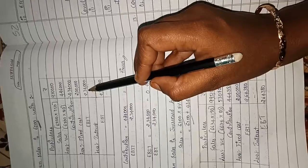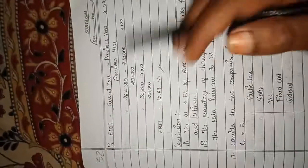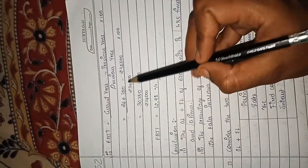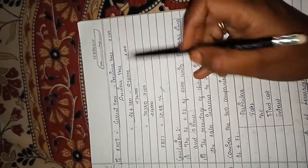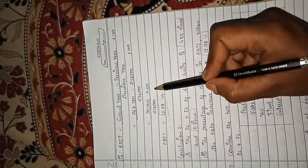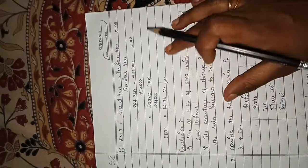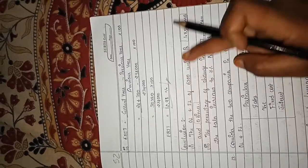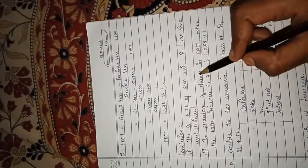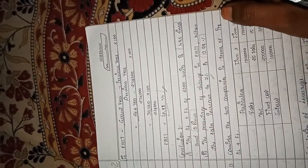The original EBIT is 2,34,000. New EBIT is 2,64,380. So 2,64,380 minus 2,34,000 divided by 2,34,000 into 100 equals 12.98 percent. Henceforth we can say that EBIT increases by 12.98 percent when sales increases by 7 percent.